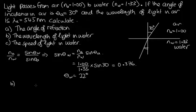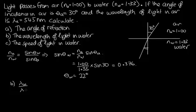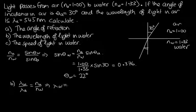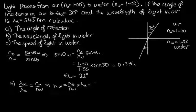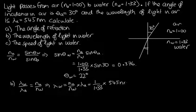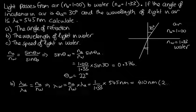Next, we're asked to calculate the wavelength of the light in water. From Snell's law, λ_water over λ_air equals N_air over N_water. So λ_water equals N_air over N_water times λ_air, which is equal to 1 over 1.33 times 545 nanometres. Solving on the calculator, we end up with 410 nanometres — to three significant figures.